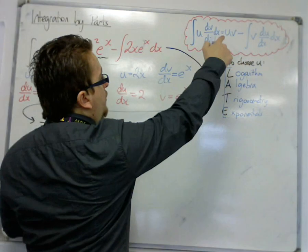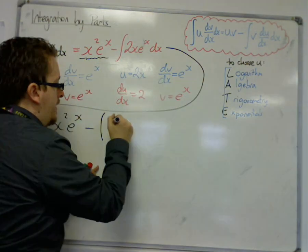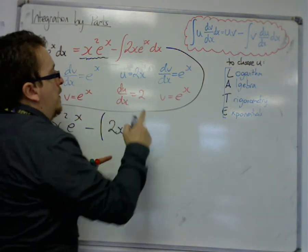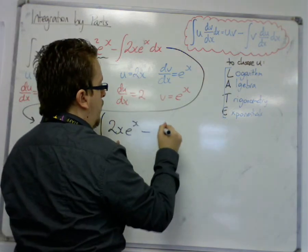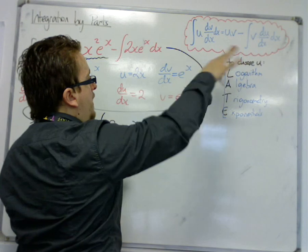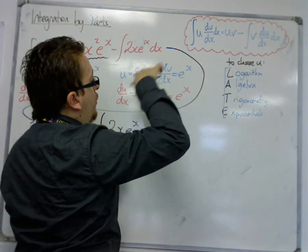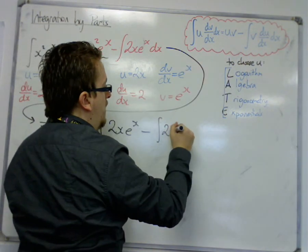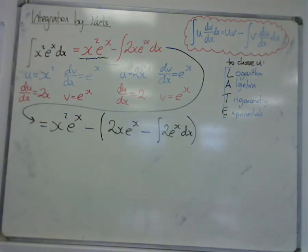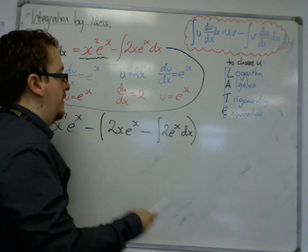So we have the u times v, 2x times e to the x. u times v, take away the integral. I'm following this formula again up here. So we've got v times du by dx, that's 2 e to the x dx. I haven't added a plus c yet, I do that right at the end.